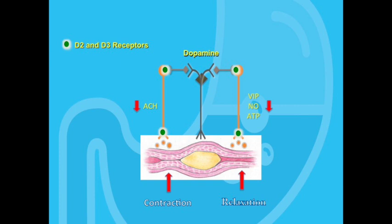Endogenous opioids are released by the gut in response to a number of stimuli, and there are three main opioid receptors: delta, kappa, and mu. Delta and kappa receptors are found mostly in the CNS and mediate visceral pain sensation. Mu receptors, however, are found in the gut among other places. Think of endogenous opioids as another braking system the body has to suppress the peristaltic reflex — when endogenous opioids bind to the gut mu receptor, ACH secretion is greatly reduced.